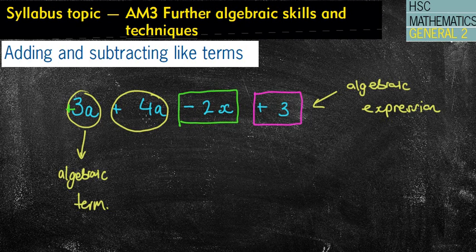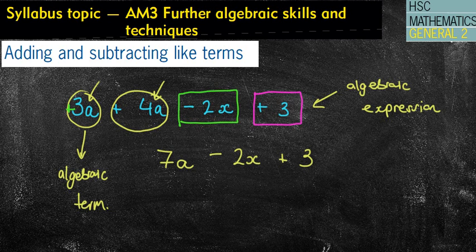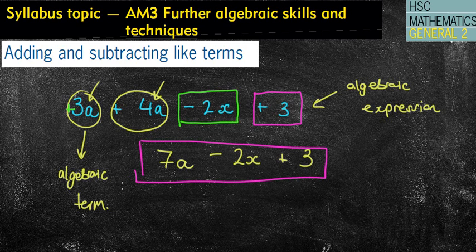Adding and subtracting like terms means I can only add or subtract terms that have the same letters. The letters for algebra represent an unknown number. I could have 3 lots of one number plus 4 lots of the same number, which means I've got 7 lots of that particular number. Then 2 lots of another number plus 3 altogether. So that means I have 7a minus 2x plus 3 and I cannot do anything else with that.